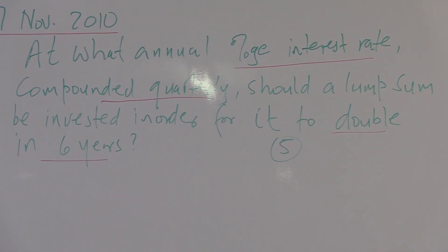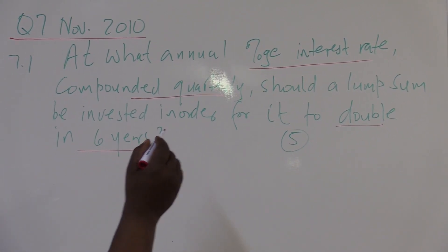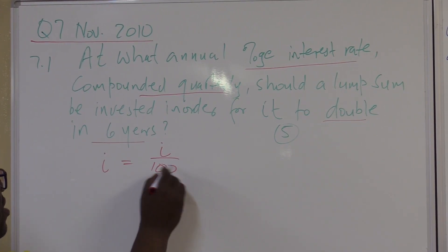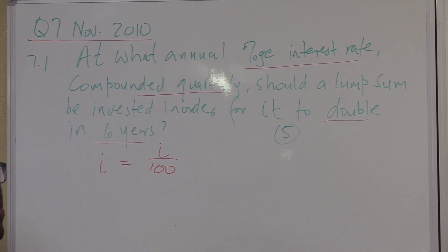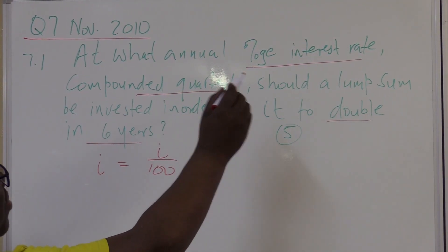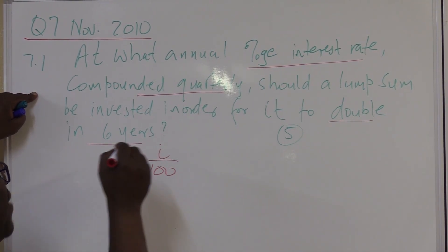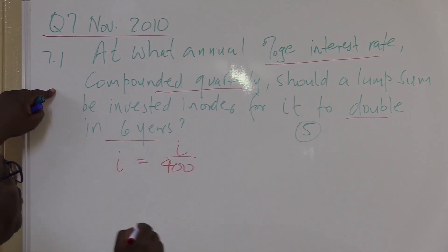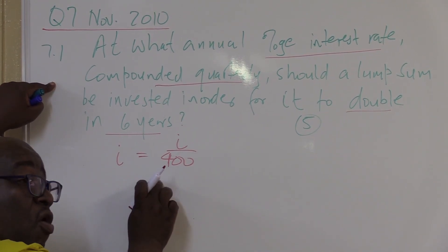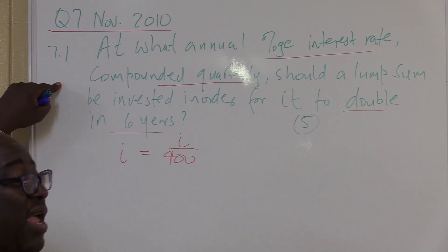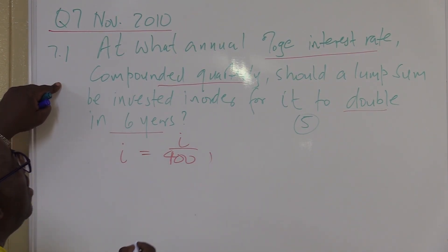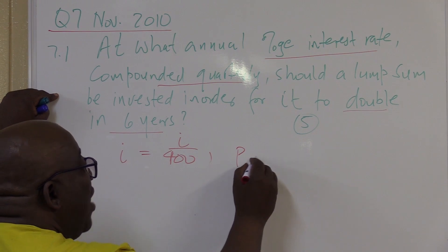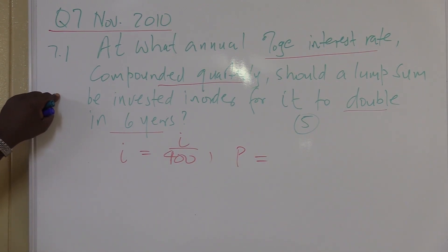Let us collect our data. At what annual percentage interest rate - so I'm looking for i. It is i over 100. Check how it was compounded. Compounded quarterly, so I divide my i by four. It will be i over 400. Remember, if I divide i by four, I must multiply n by four. Should a lump sum - what is a lump sum that is deposited? It is P. Do I know the value of P? We can't pick up the value of P. Let's call it x.